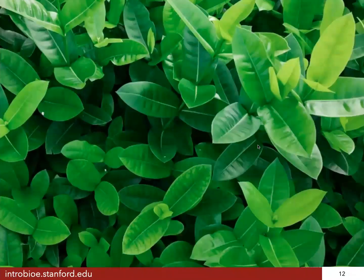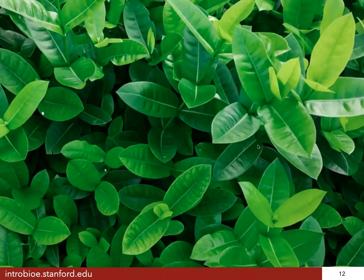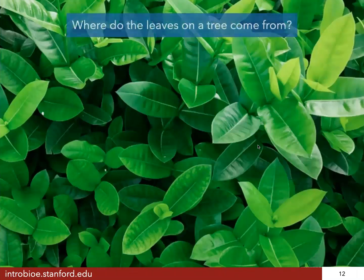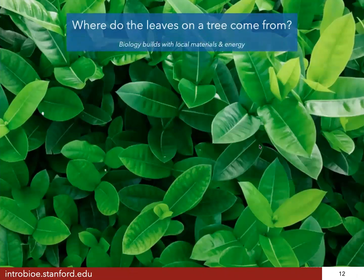Next topic. Look at a leaf, a tree, a bush, and ask: where are the leaves coming from? Do they come from a factory where leaves are made in large quantities, packed in boxes, and shipped to the tree, then stapled to the branches? No. Instead, the leaves on the tree come from the tree itself. The tree grows the leaves from photons from the sun, carbon dioxide from the air, and water and nutrients from the soil through the roots. Biology is building with the materials and energy that are where the biology is.